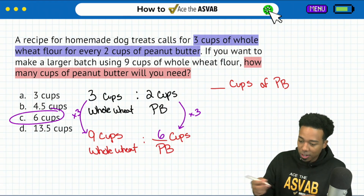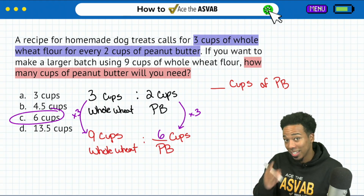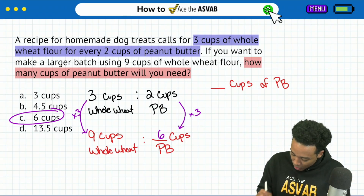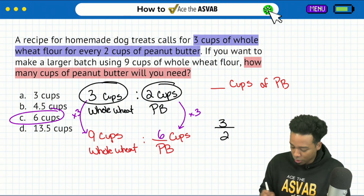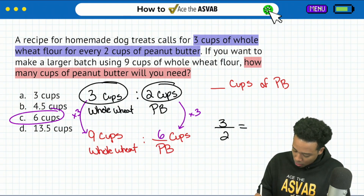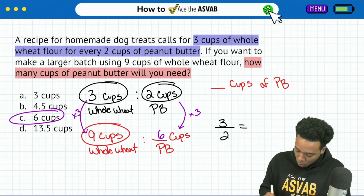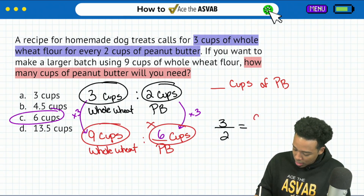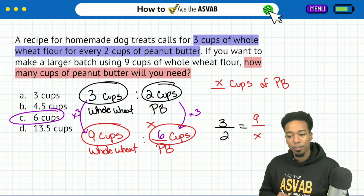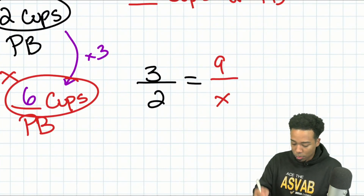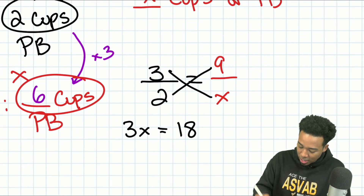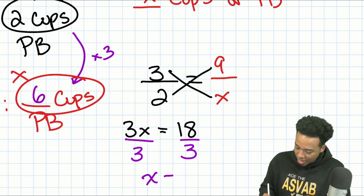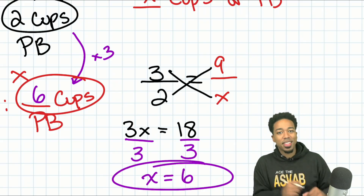Let me also show you the proportion setup so we can move forward. We have three over two — whole wheat to peanut butter — equals nine over x, which is what we're looking for. Cross multiply and divide: three times x is 3x, two times nine is 18, then divide by three on both sides, and we get x equals six. The proportion method gives us the same exact answer.